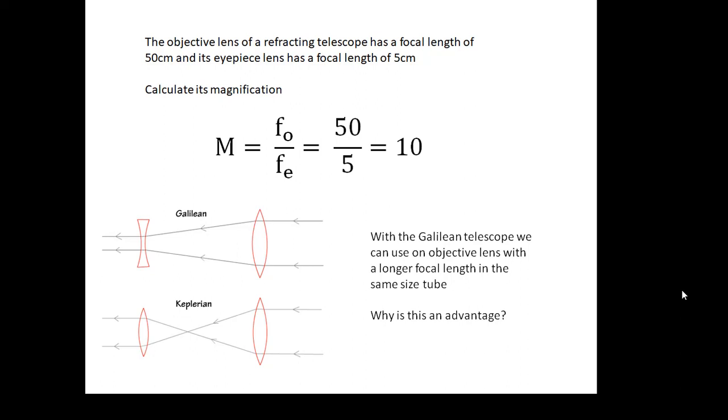Coming back to the two types of refracting telescope for a minute, with the Galilean telescope, we can use an objective lens with a longer focal length in the same size tube. Now, why is that an advantage? Well, basically, the longer the focal length of the objective, then the bigger the magnification will be, if you look at the formula above.